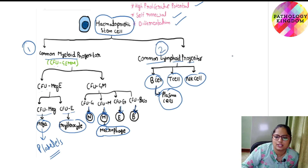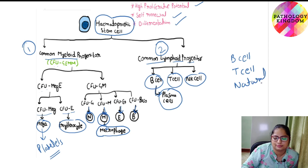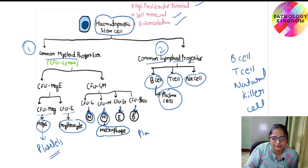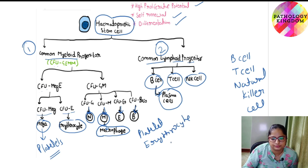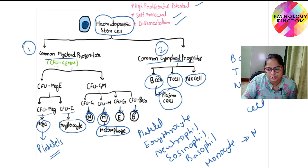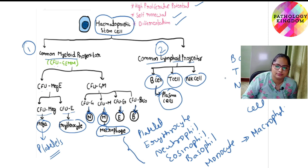The common lymphoid progenitor gives rise to B cells, T cells, and natural killer cells. The common myeloid progenitor gives rise to platelets, erythrocytes, neutrophil, eosinophil, basophil, and monocyte — which goes into tissue and matures into macrophage. These are the formed elements in blood.